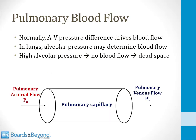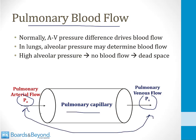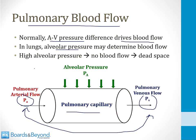What drives pulmonary blood flow? Blood enters the pulmonary capillary from the pulmonary artery at pressure P-sub-A and leaves to pulmonary veins at pressure P-sub-V. Normally, the AV pressure difference drives blood flow. However, in the lungs there is a third pressure — the alveolar pressure — which can compress the capillary. If alveolar pressure is very high, it can compress the veins or arteries, leading to no blood flow. No blood flow with continued ventilation is what we call dead space.